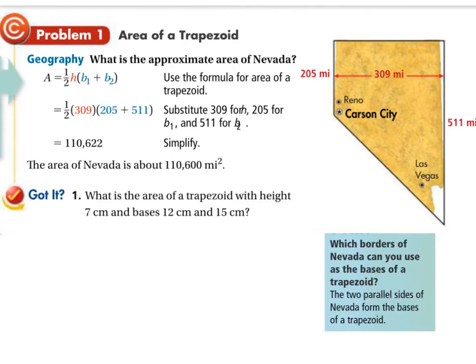That was a quick problem. And in just a minute, here's a problem for you. You're going to pause it, you're going to solve it, and then you're going to unpause it and check your answer. What's the area of the trapezoid with height 7 and bases of 12 and 15? Pause the video, calculate this out, and unpause it to see the answer.